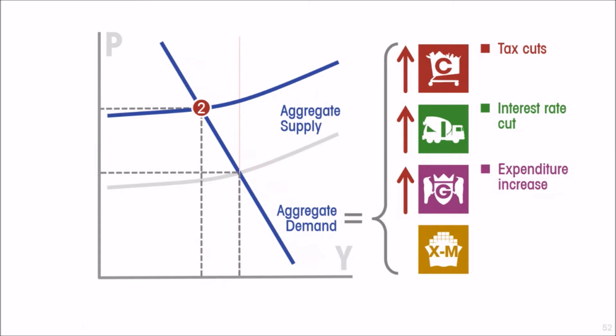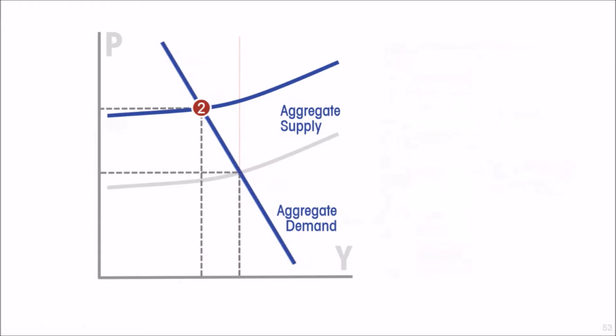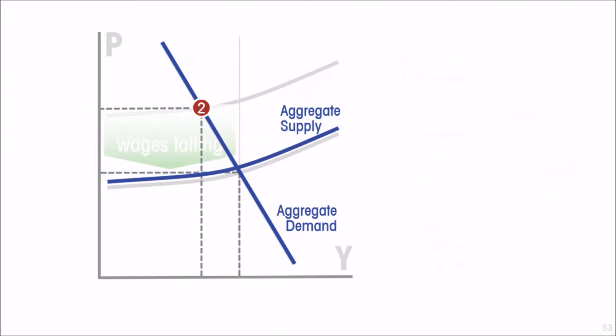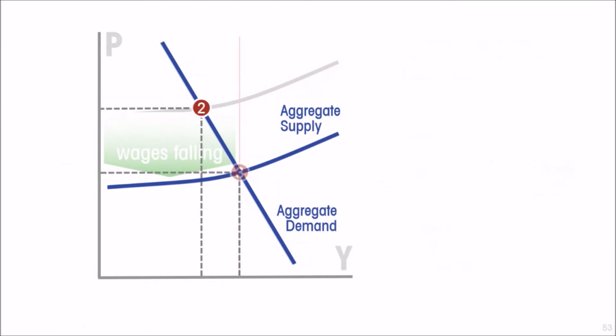Failing expansionary fiscal policy, you just have to wait for however long it takes and however gradually real wages fall, and the output gap is closed on its own.